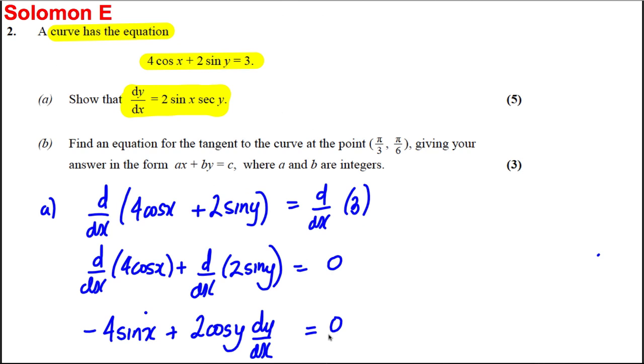So that's the first part for 5 marks — very easy marks there. Now find the equation of the tangent to the curve at this point, giving your answer in the form ax + by = c where a and b are integers.